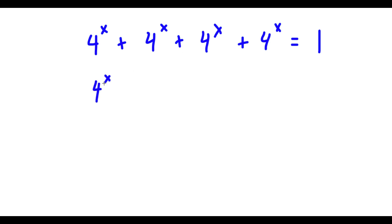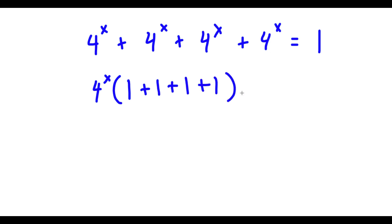So now I have 4 to the power of x times — 4 to the power of x divided by 4 to the power of x is 1 — so I have 4 to the power of x times 1 plus 1 plus 1 plus 1. This is equal to 1. If I simplify what's in the parentheses, I get 4. So now I have 4 to the power of x times 4 is equal to 1.